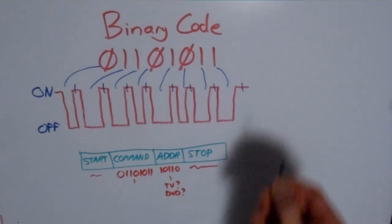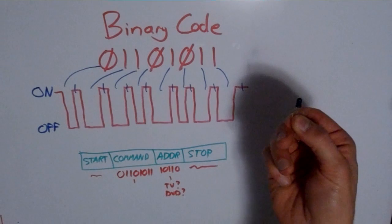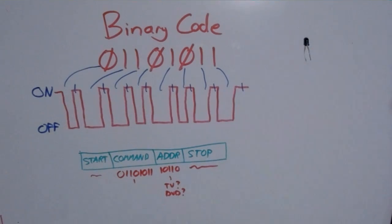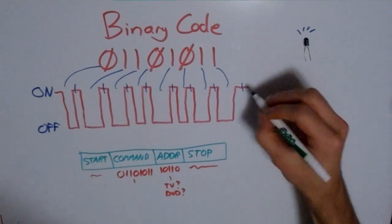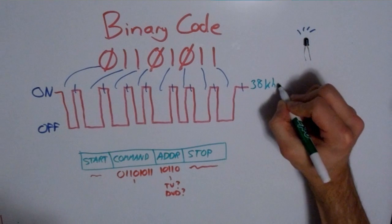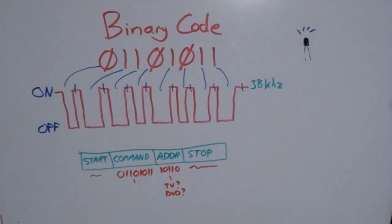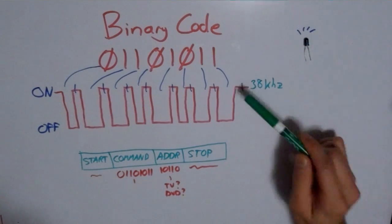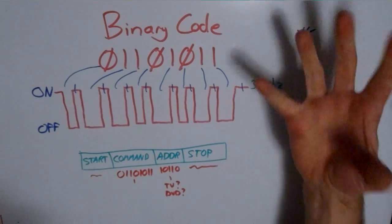To actually transmit this information, your remote will flash an infrared LED that looks something like this. But it doesn't just flash the LED on and off. It'll actually flash at a very specific rate. A common frequency is 38 kHz. This means that every time the LED is in the on state, it's not actually completely on. It's flashing at 38,000 times every second.